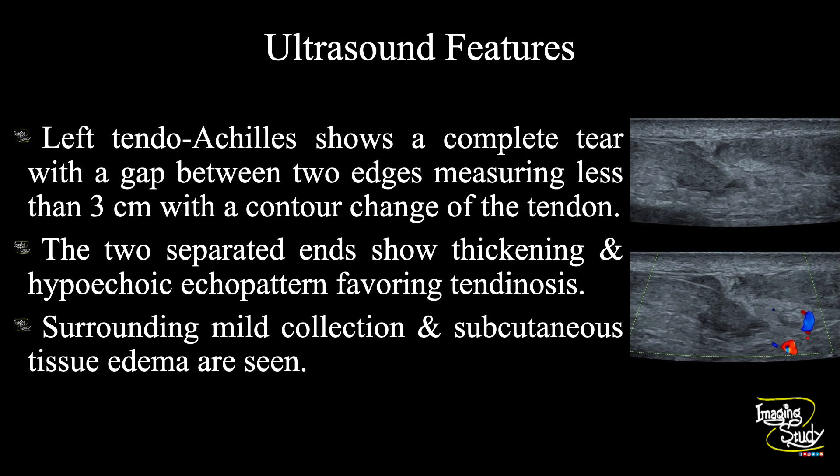In summary, the left tendo Achilles of this patient shows a complete tear with a gap between the two edges measuring less than 3 centimeters, with a contour change of the tendon. The two separated ends show thickening and hypoechoic echo pattern favoring tendinosis. Surrounding mild collection and subcutaneous tissue edema are also present. These features conclude it as a case of full thickness tendo Achilles tear with surrounding mild collection and tendinosis.